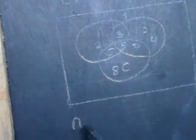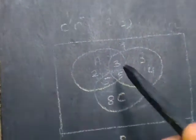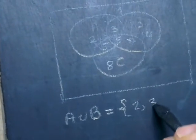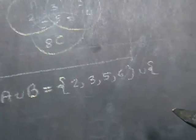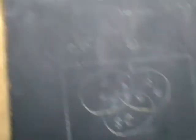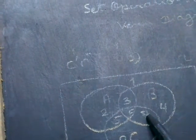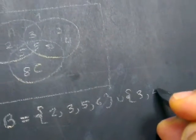A union B first. A has regions 2, 3, 5, 6. B has regions 1, 2, 3, 5, 6. A union B is the set of regions 1, 2, 3, 5, 6.